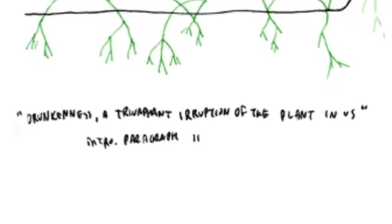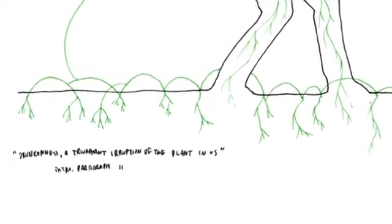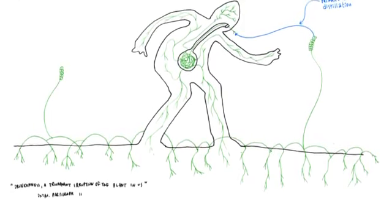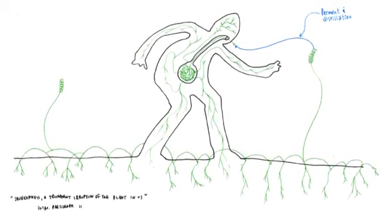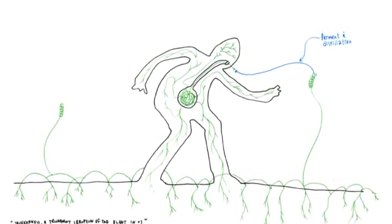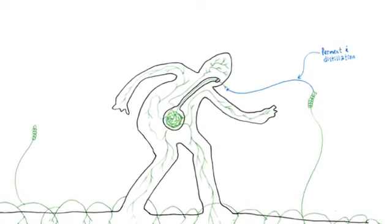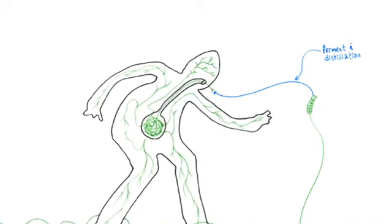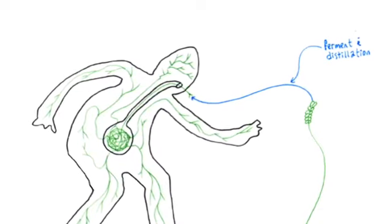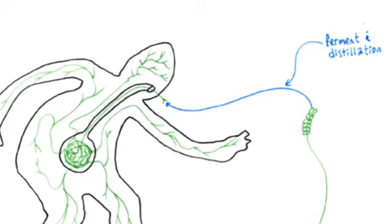Mimicry is a very bad concept, since it relies on binary logic to describe phenomena of an entirely different nature. The crocodile does not reproduce a tree trunk any more than the chameleon reproduces the colors of its surroundings. The pink panther imitates nothing. It reproduces nothing. It paints the world its color, pink on pink. This is its becoming world, carried out in such a way that it becomes imperceptible itself, asignifying, makes its rupture, its own line of flight, follows its aparallel evolution through to the end.